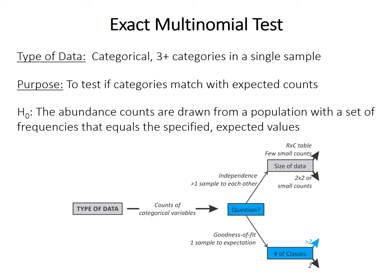The exact multinomial test has much the same approach as the binomial test. It's for categorical data when you have three or more categories in a single sample. Its purpose is to test if the category counts match the expectation, with the null hypothesis that they're drawn from a population with a set of frequencies equal to the expected values. It's not easy to graphically illustrate the multinomial distribution, but it calculates an exact p-value by looking at all events at least as extreme as what you found, using the multinomial distribution.